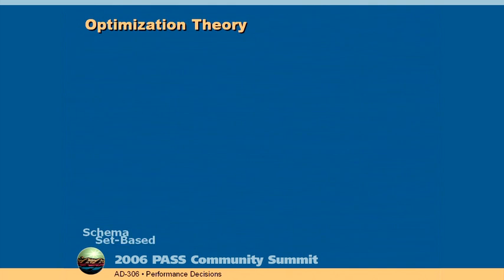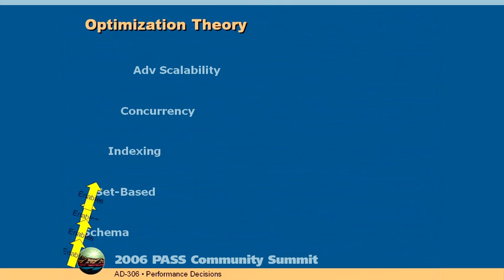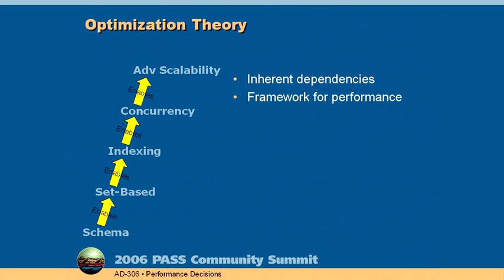Here's the big umbrella idea of optimization theory: inside the database, there are inherent dependencies between the schema, set-based code, indexing, concurrency, and advanced scalability. The best way to optimize your database is to take advantage of these dependencies so that you really enable the layer you're wanting to work at. Optimization theory is a framework for performance and a way to understand and repeat good performance from one project to another.